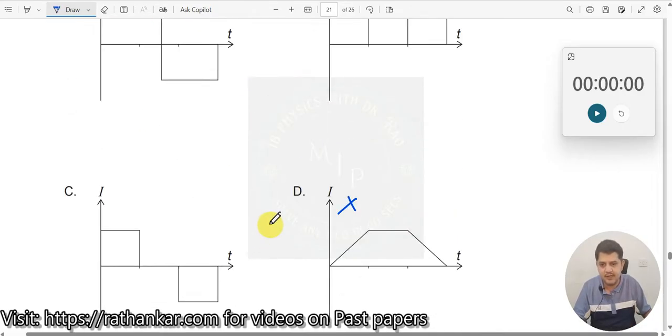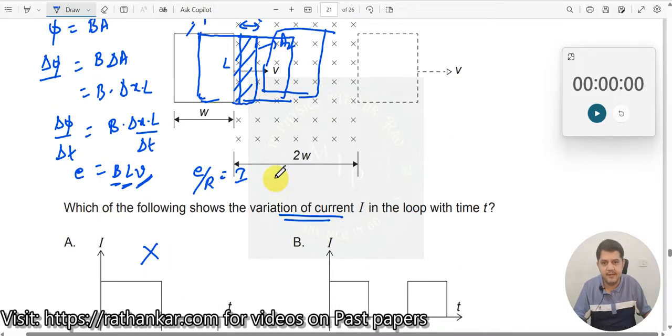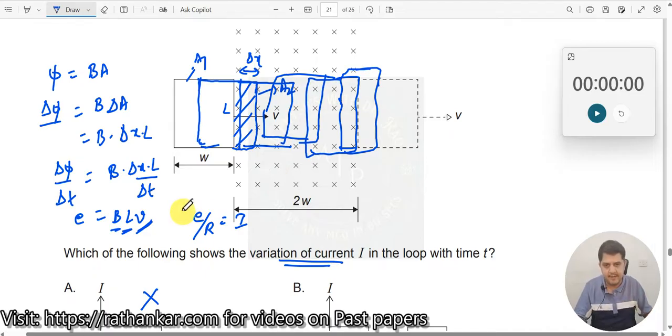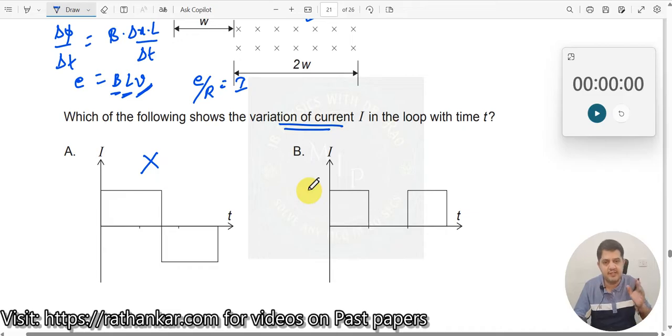Now we have B and C, which one to decide? In B, when we go here, it is exiting the loop. Until here, the same condition will persist. The moment it comes over here, the magnetic field is now reducing. The flux inside is reducing. So therefore, the current should flow in the opposite direction. Current should flow in the opposite direction when the loop is exiting. This is also not the right answer because current is in the same direction.